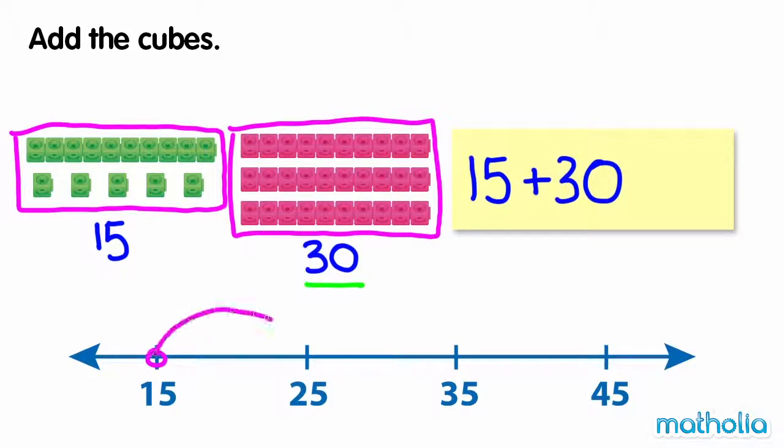15, 25, 35, 45. 15 plus 30 equals 45. There are 45 cubes.